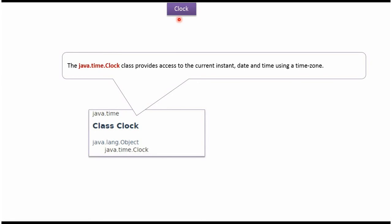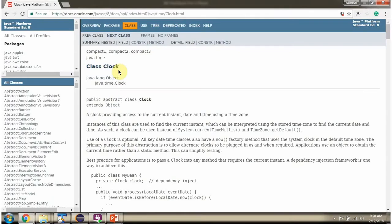In this video tutorial I will cover the Clock class. Clock class provides access to the current instant, date and time using a time zone. Clock class belongs to the java.time package. The super class of Clock class is Object class. Here you can see the Java documentation of Clock class.